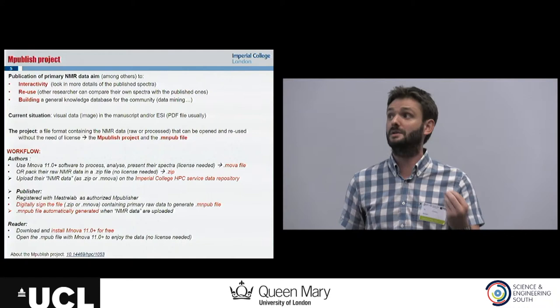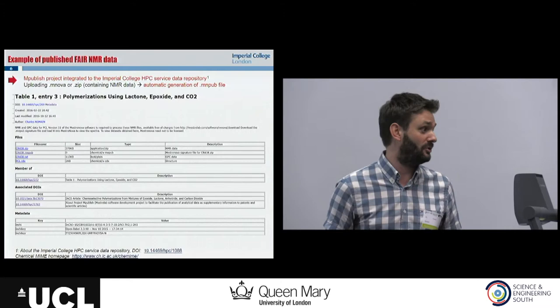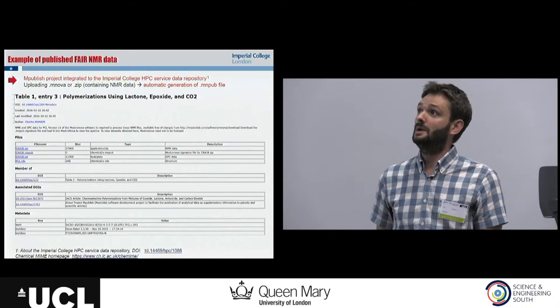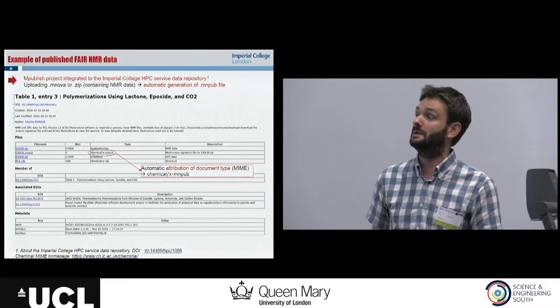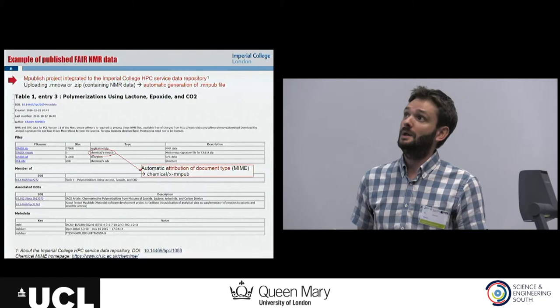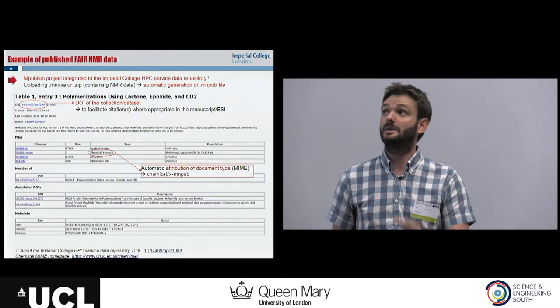Here is an example of a collection or data repository. If you have any more questions about the data repository, I have a poster at the end and I'm very happy to discuss it. We can see in that case that I uploaded a zip called CR438, with a brief description: NMR data. Automatically, this file has been created with an automatic attribution of document type XMNPUB. The collection has a DOI that, for example, allows you to use this DOI at the end of the picture. If we still publish a picture of any data, at least the reader can use the DOI in the caption of the picture to access the raw data.